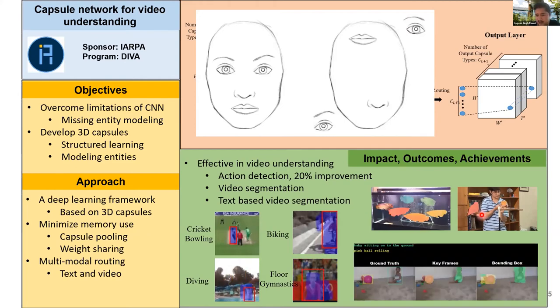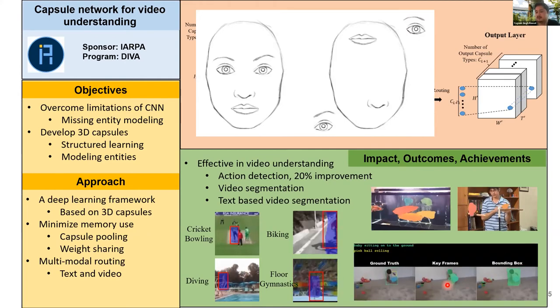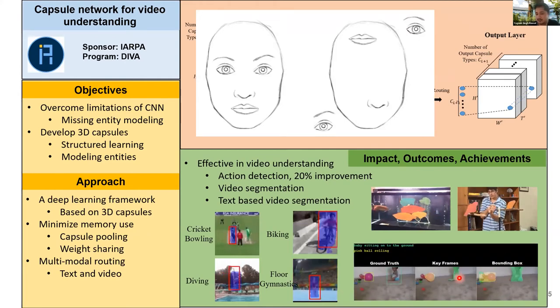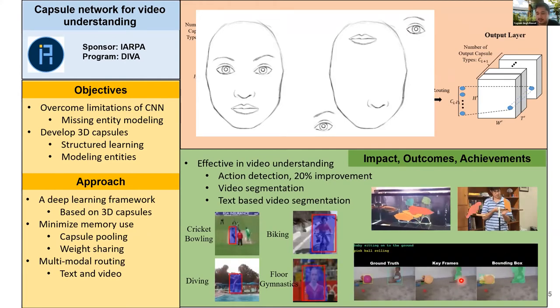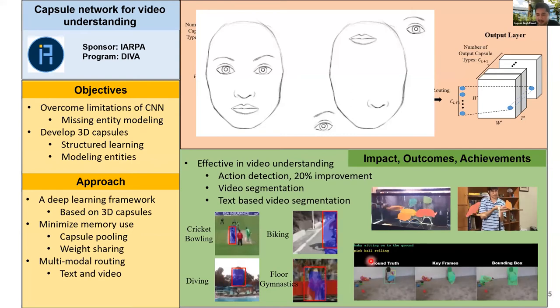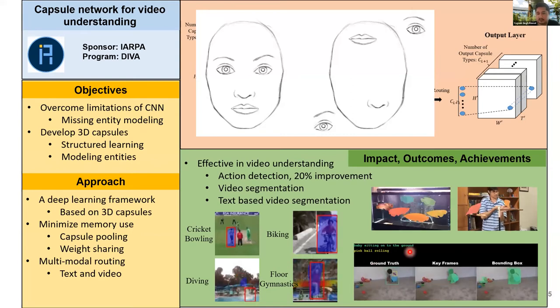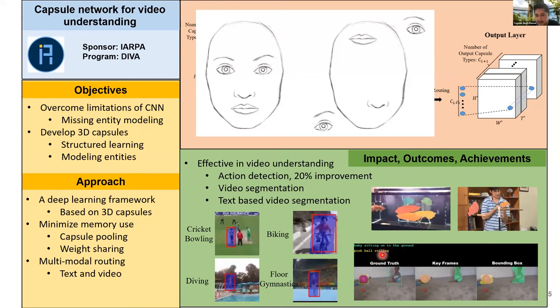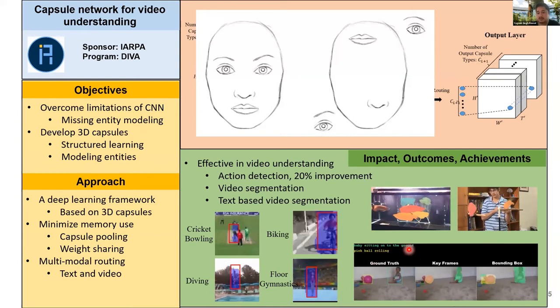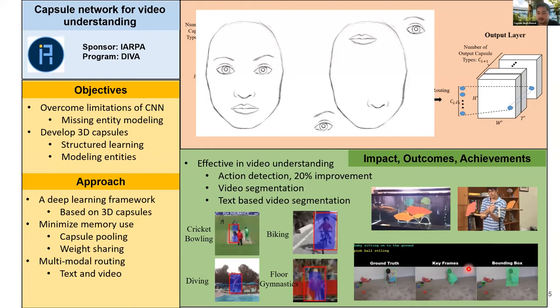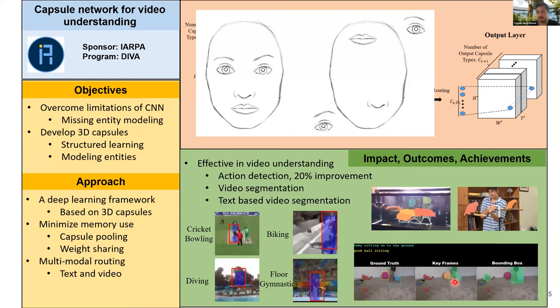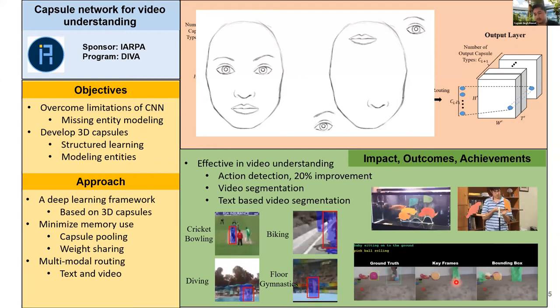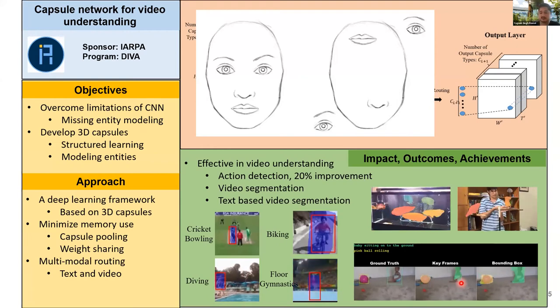The other problem where we have used these capsules is text-based segmentation. The idea is: if we have a video and some activity is happening, if you describe that activity in textual form — like 'there's a baby playing' — and you see a baby sitting on the ground, then we can segment just that baby. The system can do that as well.